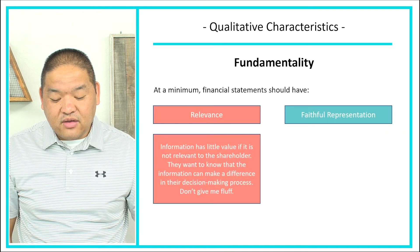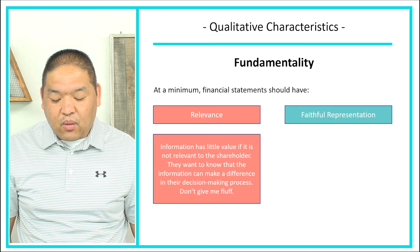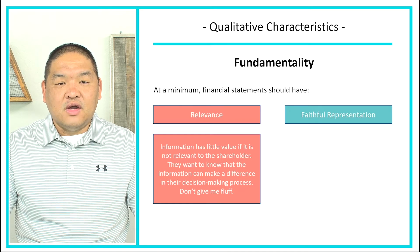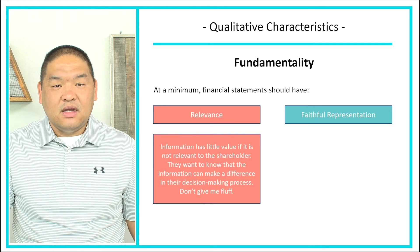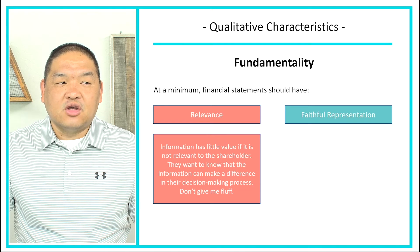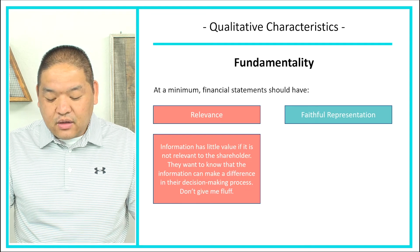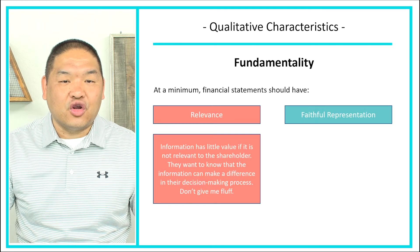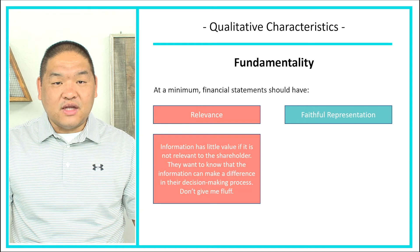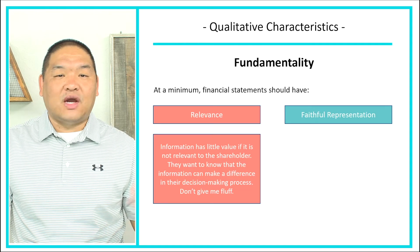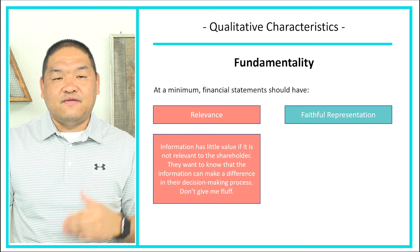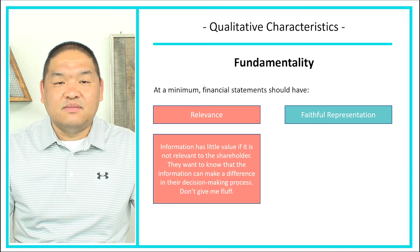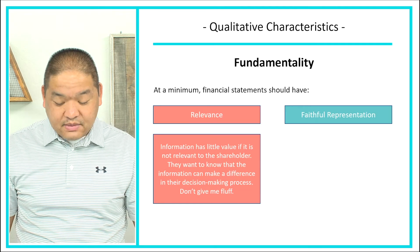Relevant information has little value if it's not relevant to the shareholders. They want to know how information can make a difference in their decision making process — don't give fluff. For example, a disclosure of dividends: will that help an investor make decisions? Yes, because dividends represent a return of earnings. A higher return raises the question of whether the company needs those funds to expand, or whether it's a gesture to reassure investors that their priorities are kept in mind.